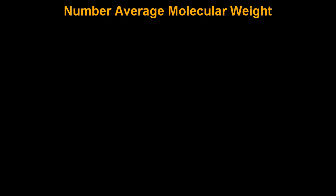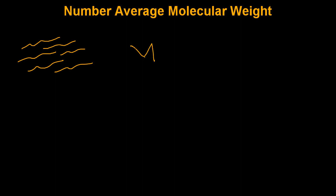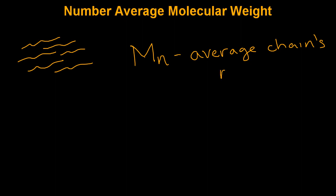The number average molecular weight is a common means of characterizing a polymer sample. Polymers typically consist of chains of varying size. In order to characterize samples as a whole, scientists will often use the number average molecular weight, which is denoted by an upper case M and a lower case n. What it essentially tells you about a sample is what the average chain's molecular weight is within the sample.